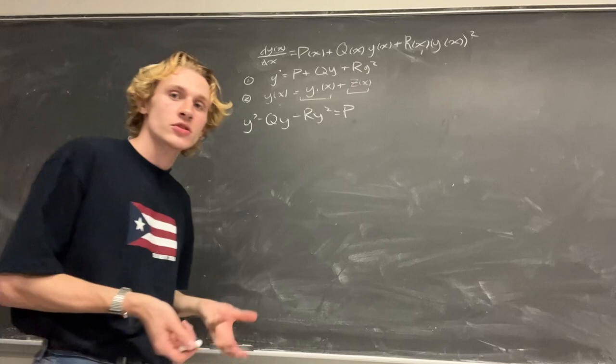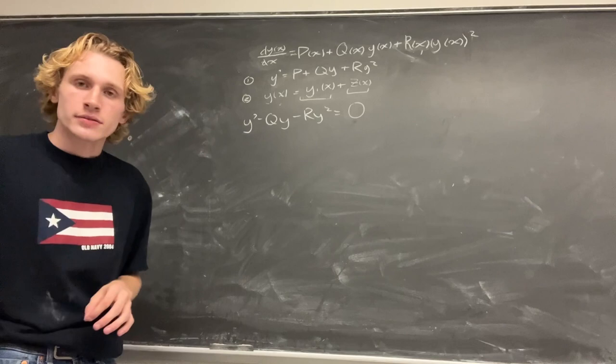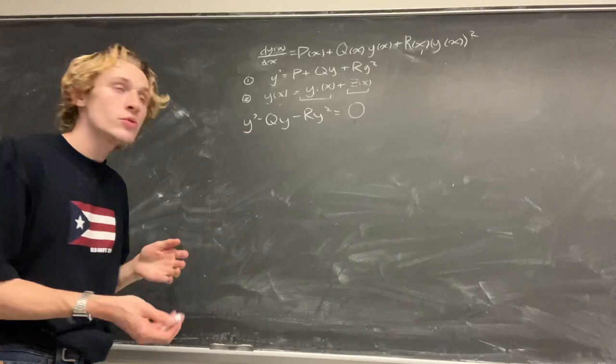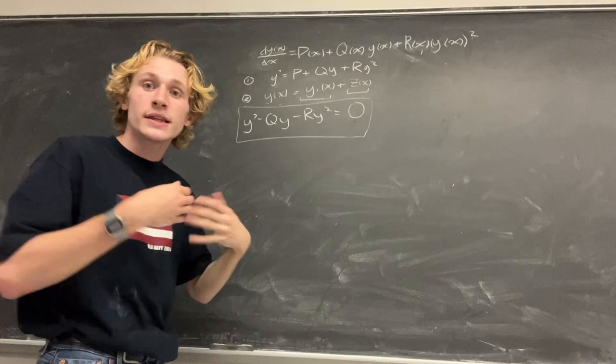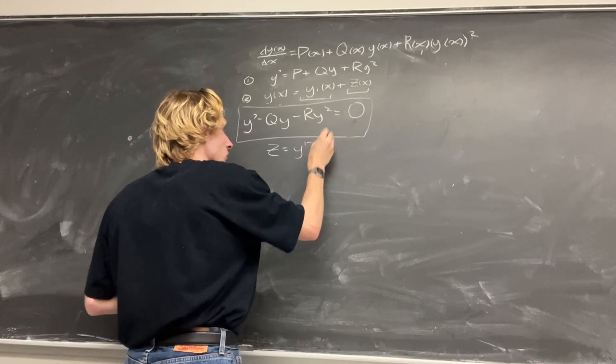But our homogeneous solution would be when we set this p to zero, which if you are acquainted with differential equations, you will know that this is just the Bernoulli equation, which is why I use z(x). The reason is that it can be returned back to a linear first-order equation via the substitution z = y^(1-n), where n is the power right here.